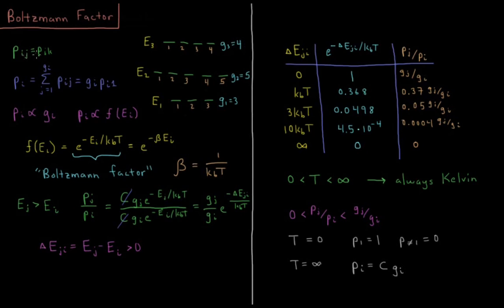From the previous video we said that the probability that the system is in a given state — if the energies of the two states are equal — are equal to one another. So the probability of state 1 equals that of state 2, and state 2 equals state 3, and so on within a given energy level. Within a given energy level, all states are equally likely to be observed.